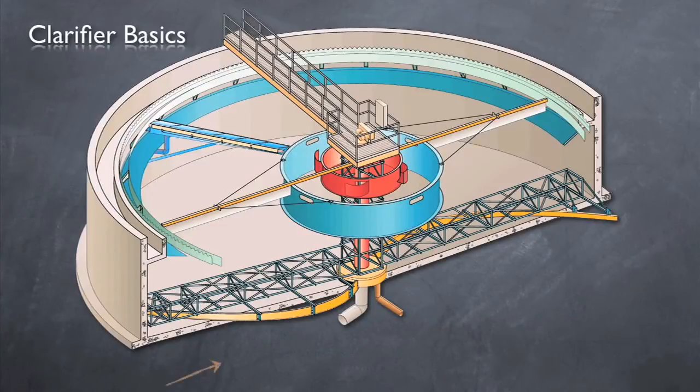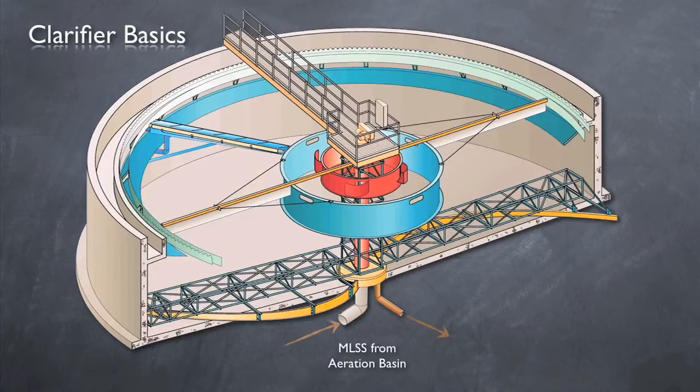Mixed liquor, typically from aeration tanks, enters through a centrally located feed pipe. From there, the flow has two ways out. First, settled sludge leaves through another centrally located pipe at the bottom of the clarifier and is recycled back into the system or wasted. This is the underflow.